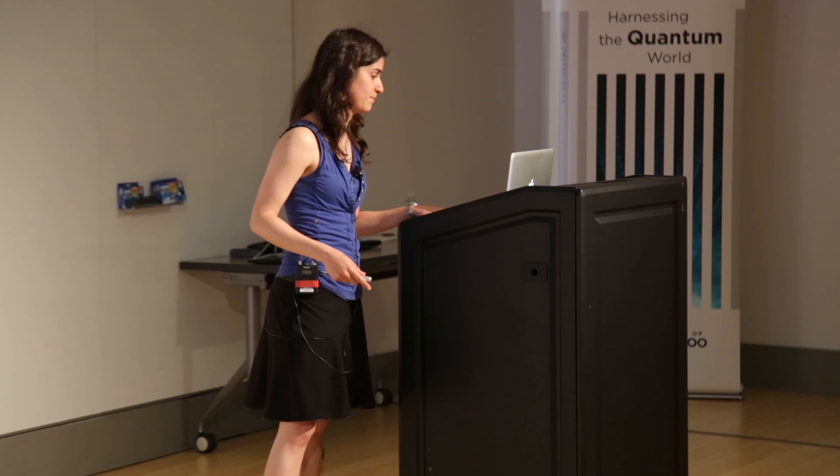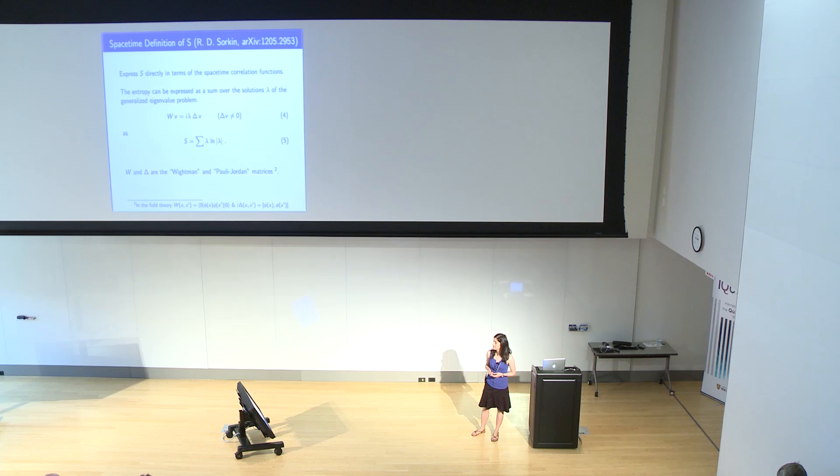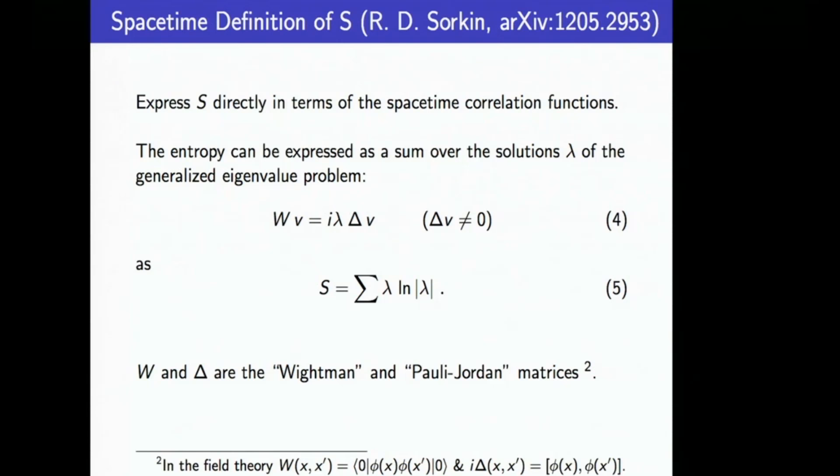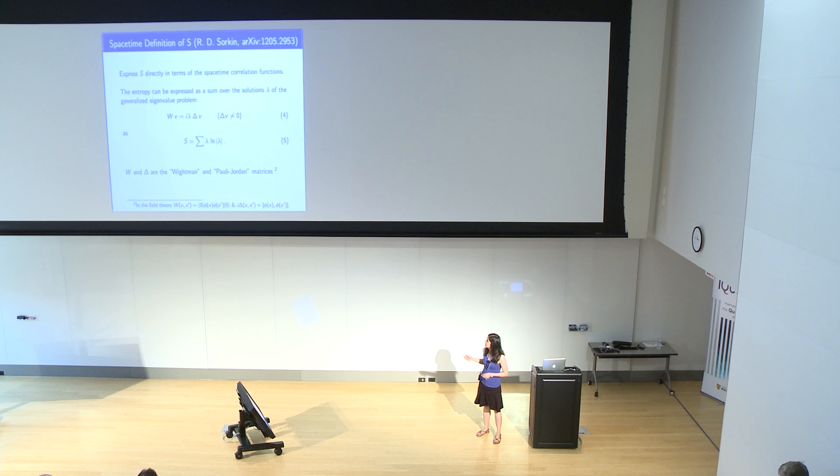Now there is a covariant spacetime definition of entanglement entropy by Raphael. It's applicable to any globally hyperbolic spacetime or causal set, and it's so far been developed for calculations with Gaussian states of scalar fields. For details and a proof of it, I'll refer you to this paper. The idea is to try and express the entropy directly in terms of the spacetime correlation function. Let me introduce W and delta.